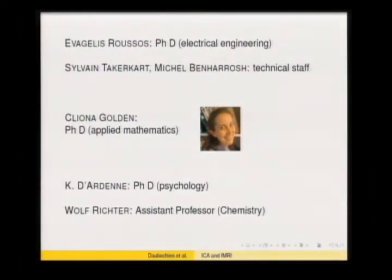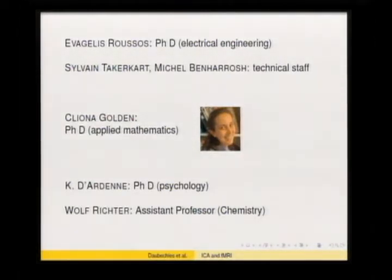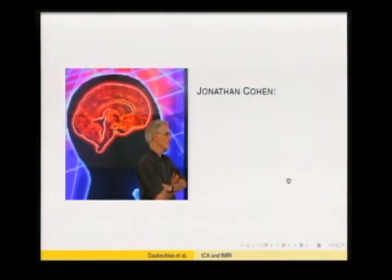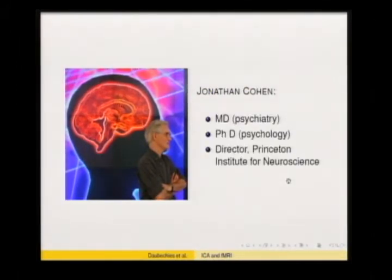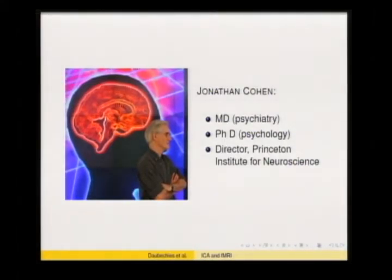The first three collaborators are in electrical engineering. Then there was one of my students who obtained a PhD in applied mathematics. Kim Darden has a PhD in psychology, and there was a professor from chemistry. The two main co-PIs were Jonathan Cohen, a medical doctor specialized in psychiatry with a PhD in psychology — an MD-PhD — who is the director of the Princeton Institute for Neuroscience.